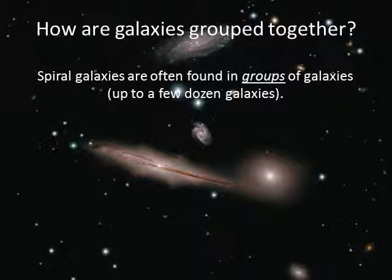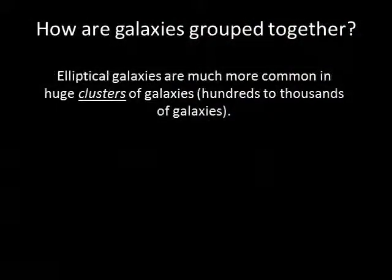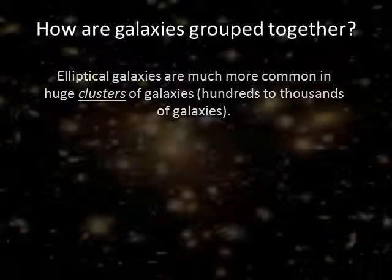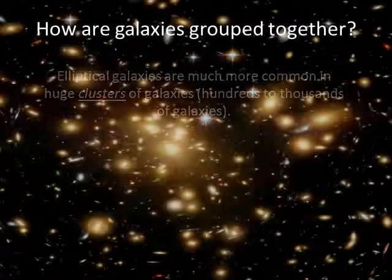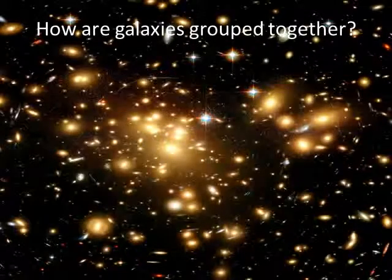So how are galaxies grouped together? Most of the galaxies in the universe are gravitationally bound together with neighboring galaxies. Spiral galaxies are often found in loose collections of up to a few dozen galaxies called groups — our Milky Way is part of the local group, for example. Elliptical galaxies are particularly common in clusters of galaxies, which can contain hundreds and sometimes thousands of galaxies extending over more than 10 million light years.